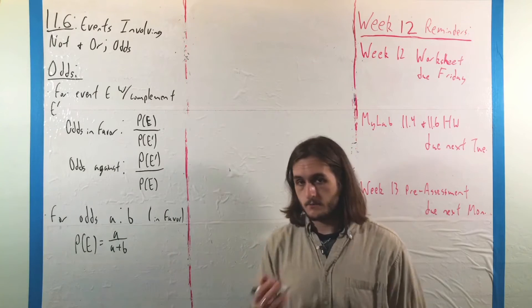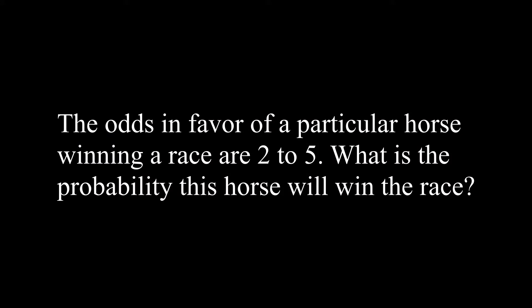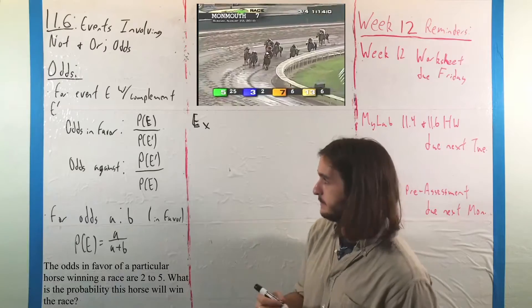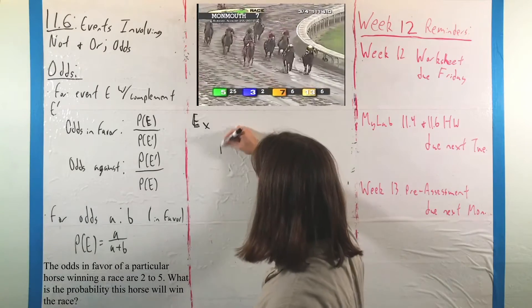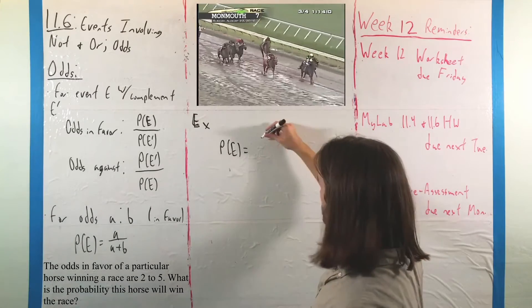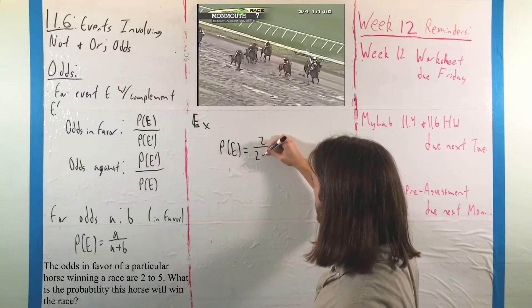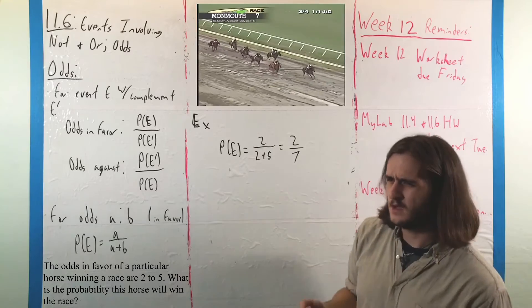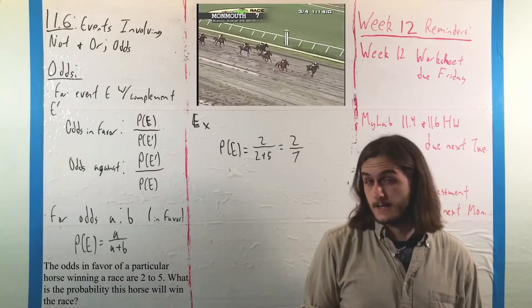For one more quick example, we have that the odds in favor of a particular horse winning a race are given as 2 to 5, and you want to find the probability that the horse will win the race given those odds. All we'd have to do is use the formula, which says that the probability would be 2 over 2 plus 5, or 2 sevenths, which as a decimal would be about 29%.